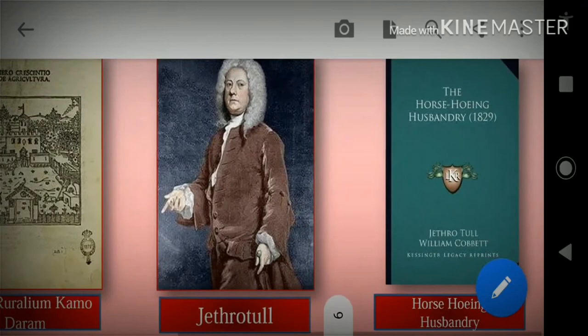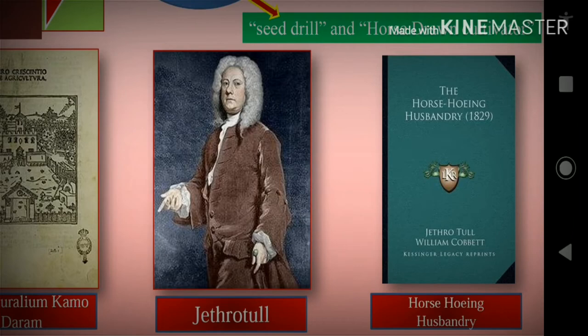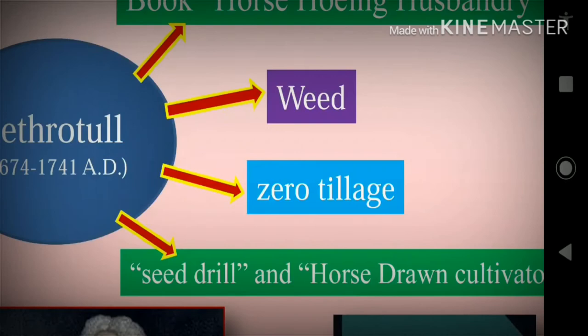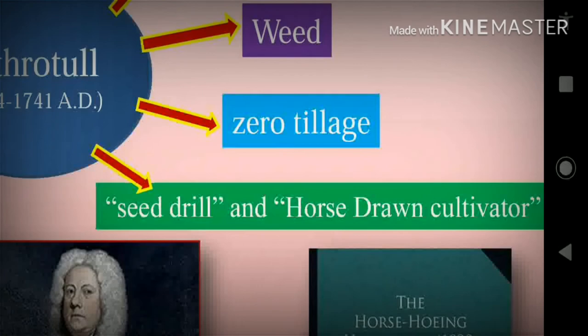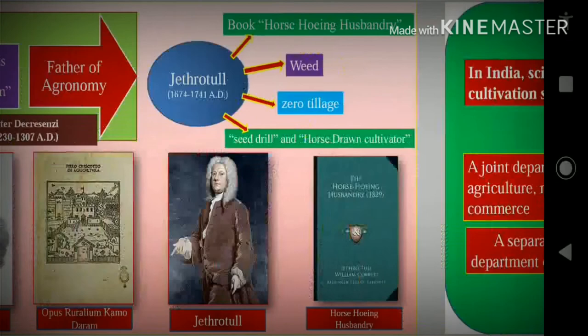Now we will see Jethro Tull. Here you can see the picture of Jethro Tull. He has written a book, Horse-Hoeing Husbandry. Here you can see that book. He used the term weed first time. He also used seed drill and horse-drawn cultivator for the first time.